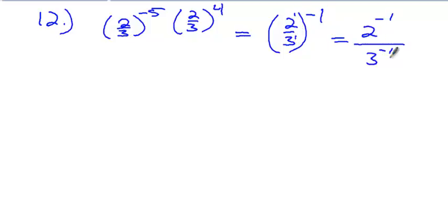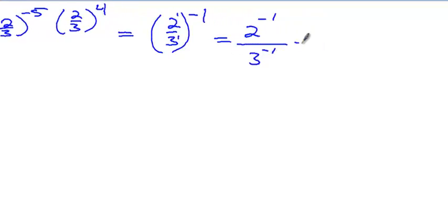Okay, so am I allowed to have negative powers now? No, so where does this 2 have to go? On the bottom with a power of 1 and 3 on top with a power of 1, and what's 3 to the first? And 2 to the first? 2.